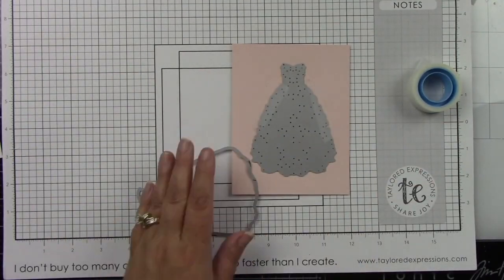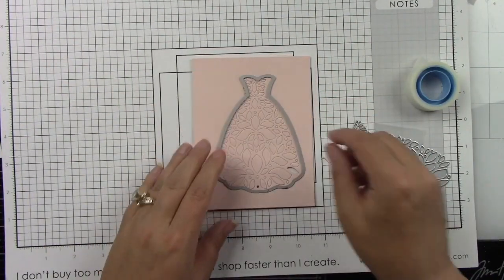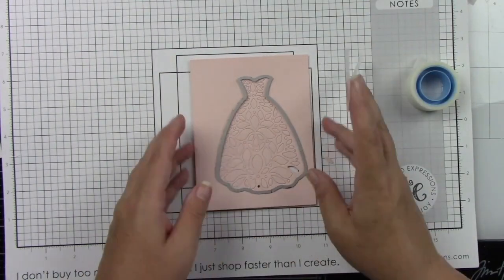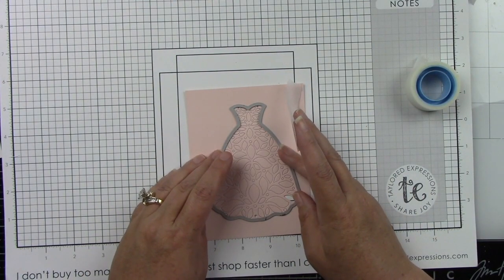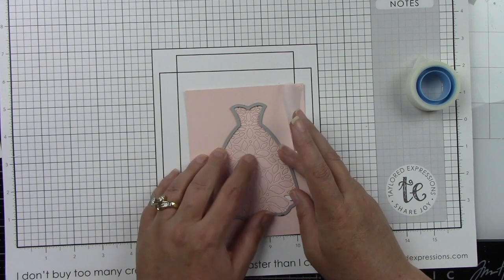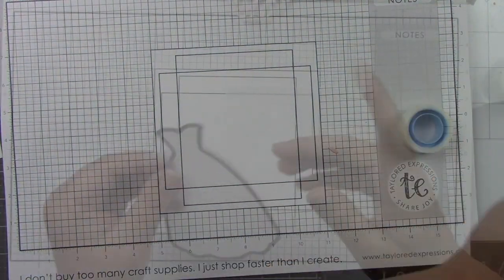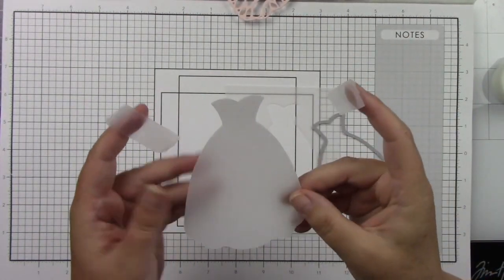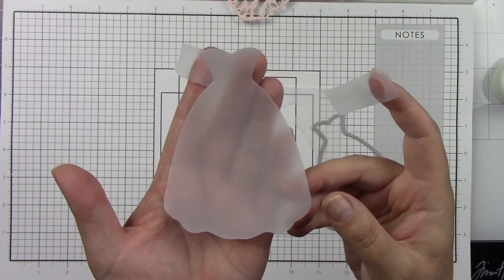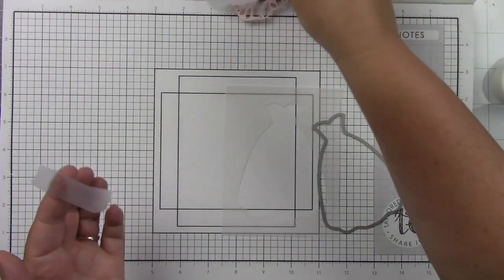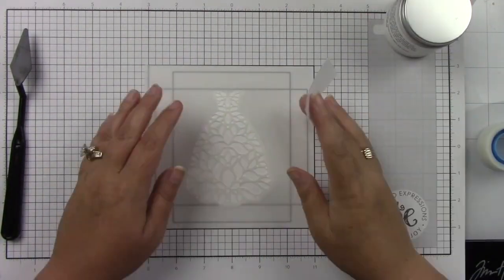I'm going to remove that intricate part, which you could just leave that on a panel without adding this die to it to die cut it out, and that would be really quite pretty. But I'm going to die cut this out again, taping that in place, and then I also die cut the solid die from vellum.